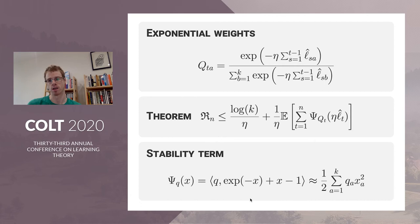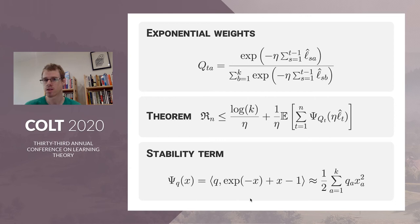The regret of the algorithm not very surprisingly depends on how much variance there is in the loss estimates. The usual plan is to construct a clever way of estimating the losses which makes this stability term small, and then tune the learning rate eta — that's what gives you your bound.